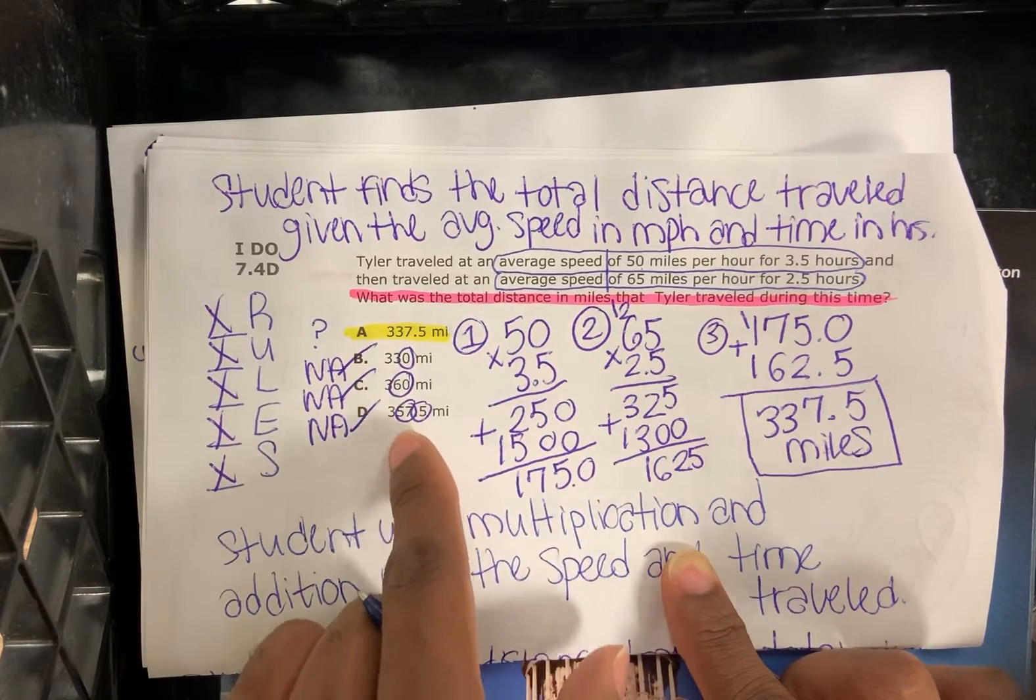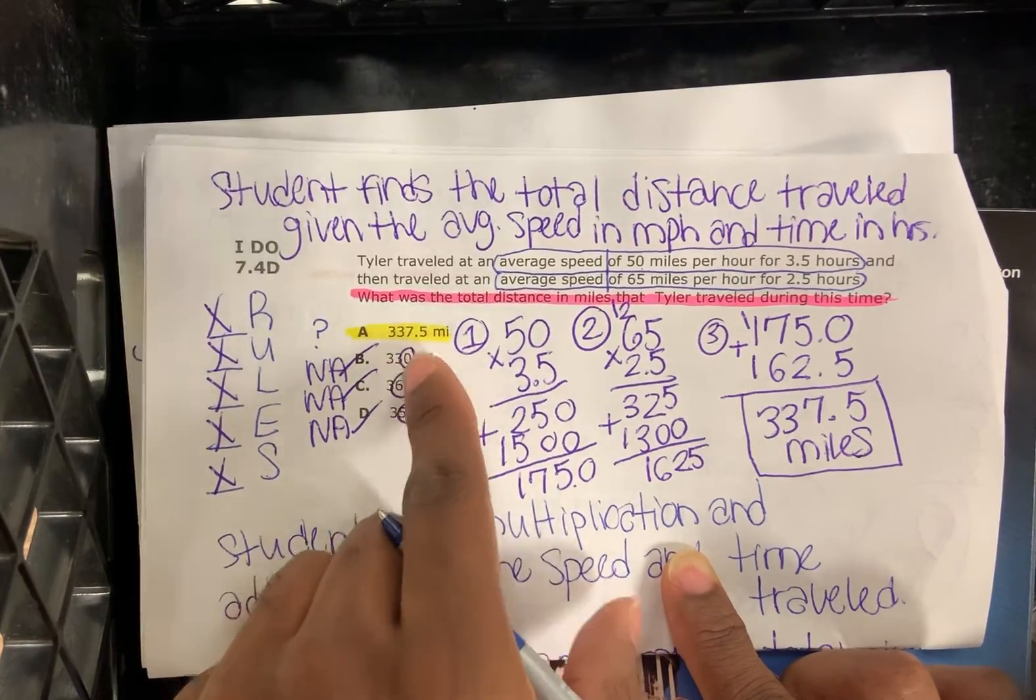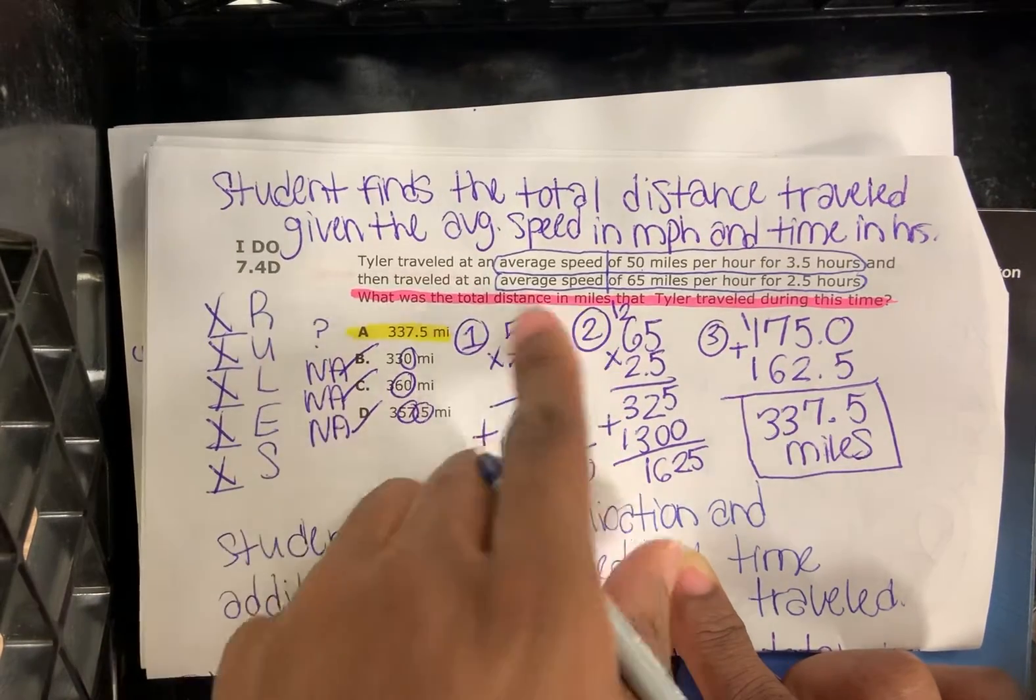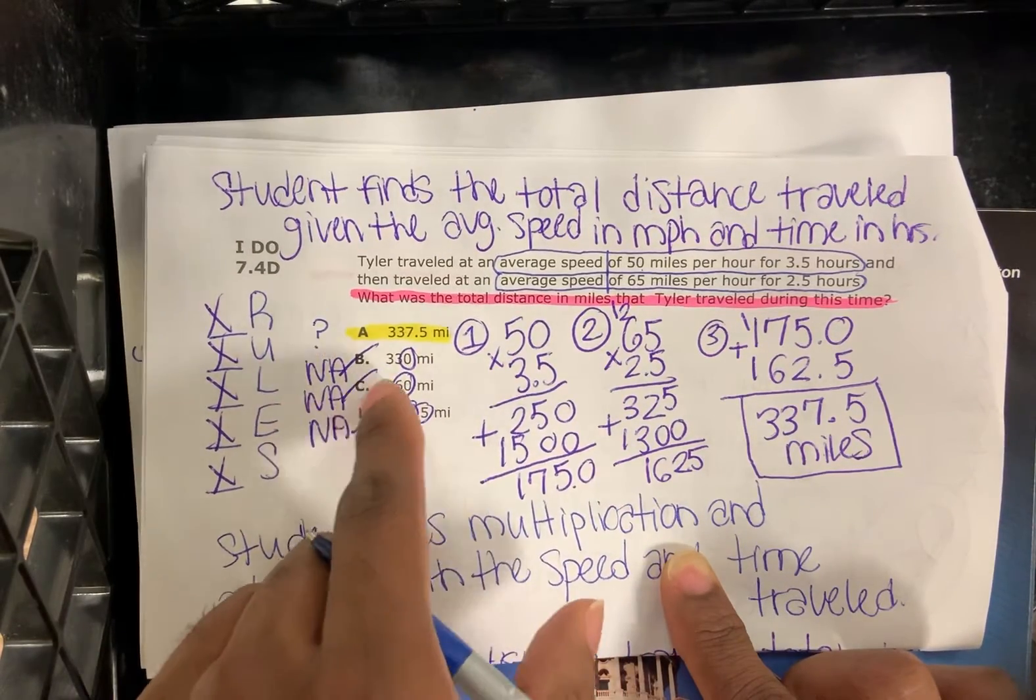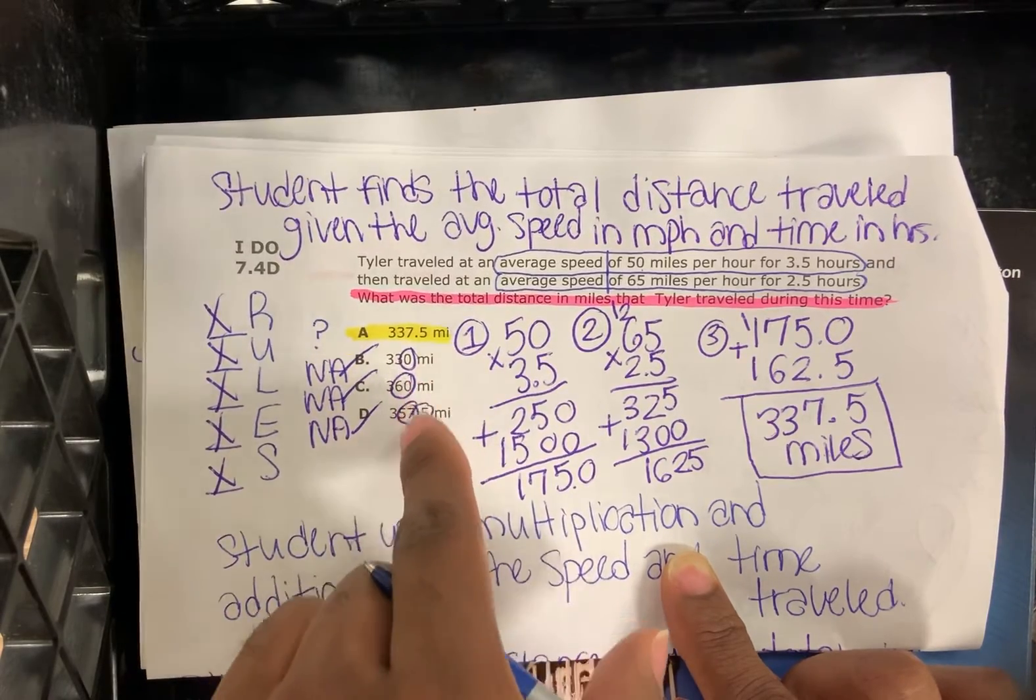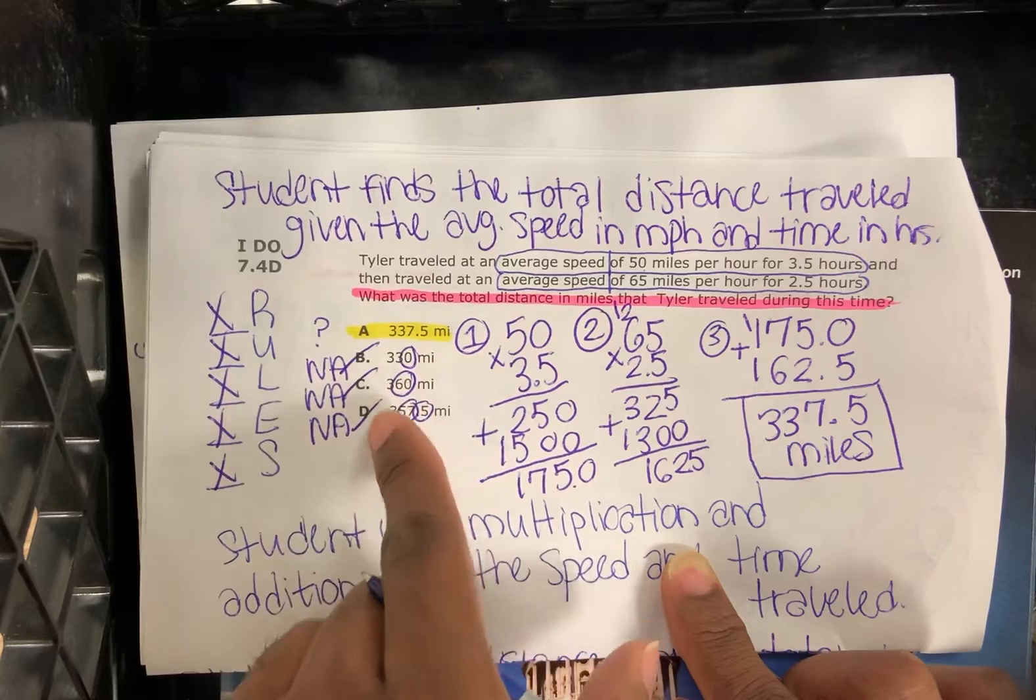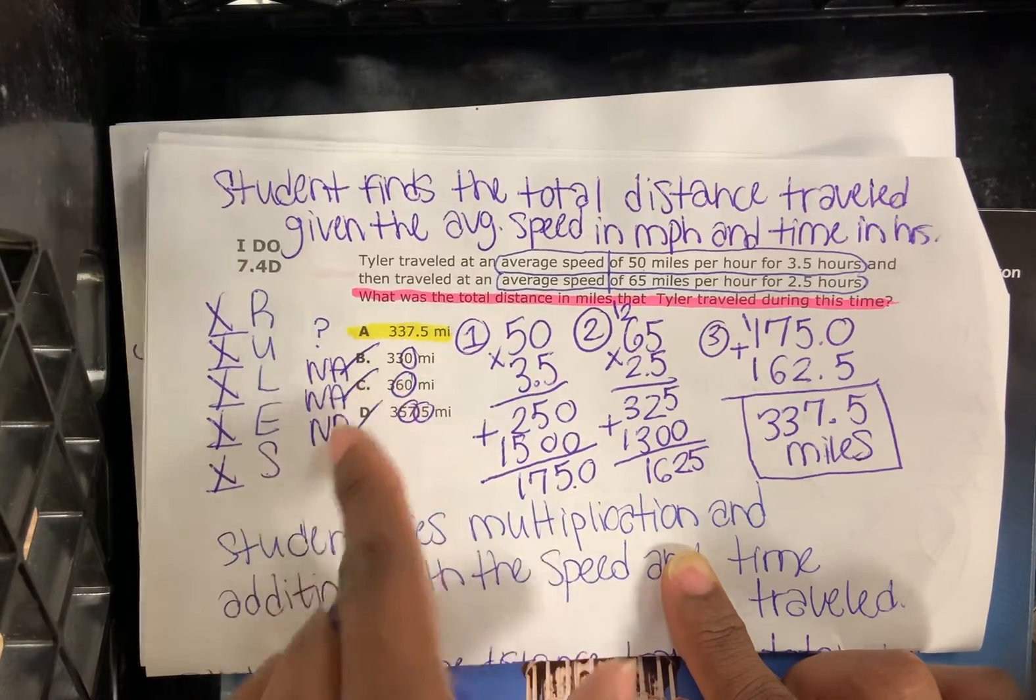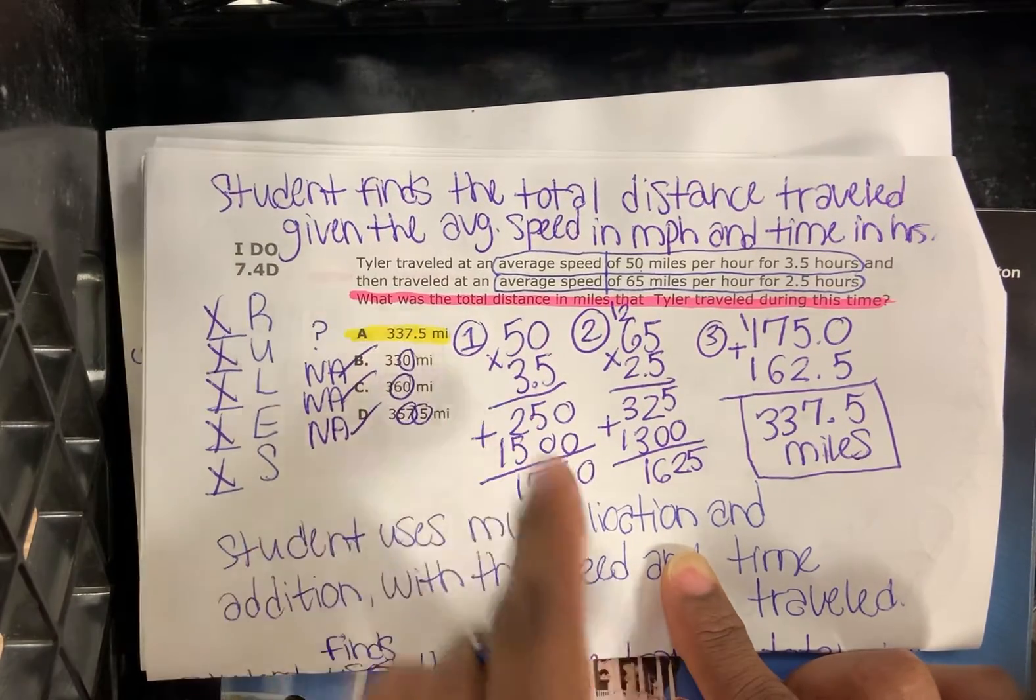The correct answer is A as in apple. We read the word problem, we highlighted or underlined the specific question, we labeled by circling and explaining what made these answer choices incorrect or not accurate. We eliminated these answer choices and then we selected the correct answer, which is A.